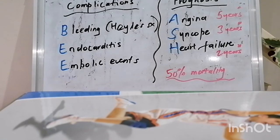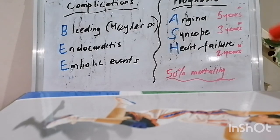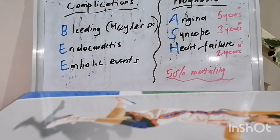Class 1 recommended indications for aortic valve replacement: severe AS with symptoms of heart failure, syncope, or exertional dyspnea — remembered as ASH — or presyncope by history or exercise testing. Also indicated for asymptomatic severe AS with a left ventricular ejection fraction below 50%, or severe AS in a patient undergoing cardiac surgery for other reasons.